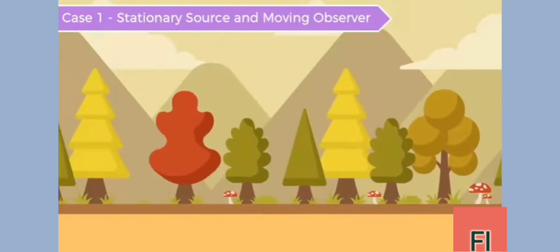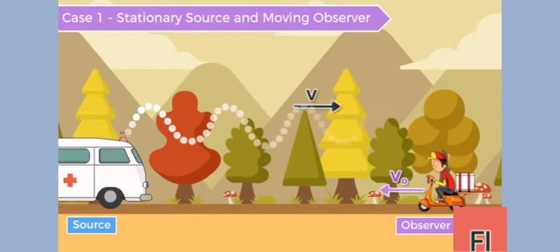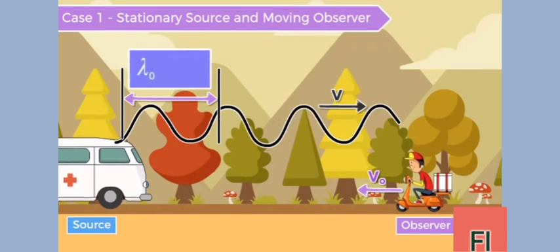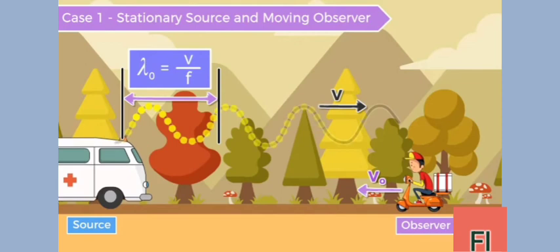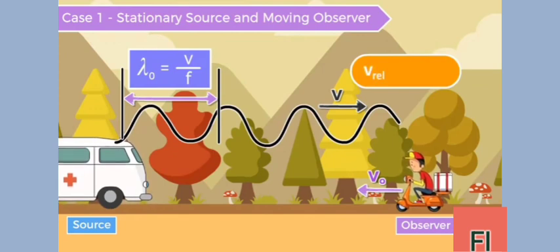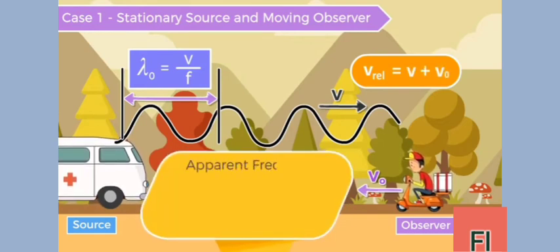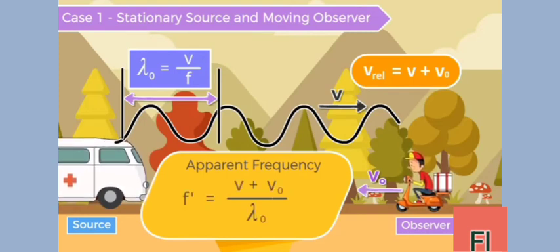Case 1: Stationary Source and Moving Observer. When a stationary source produces sound waves of frequency f, its wavelength in the air is given by the relation λ₀ = v / f, where v is the velocity of sound. Now these waves are travelling towards an observer who is moving with velocity v₀ towards the source. Therefore, the relative velocity with which the sound of wavelength λ₀ will approach the observer will be v + v₀. Thus, the apparent frequency heard by the observer is f' = (v + v₀) / λ₀, which gives f' = f × (v + v₀) / v.